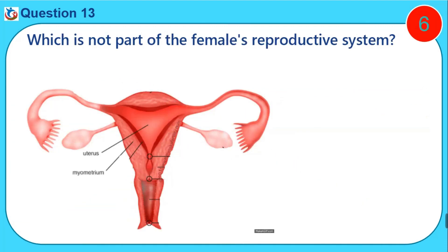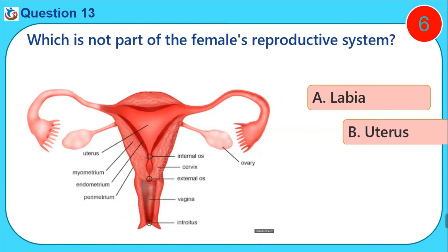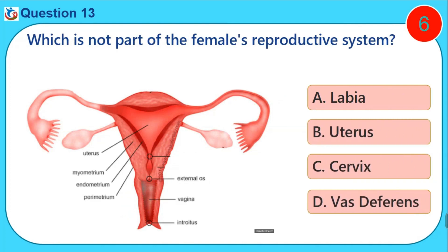Which is not part of the female reproductive system? A. Labia. B. Uterus. C. Cervix. D. Vas deferens.